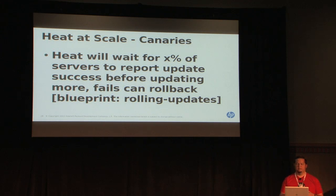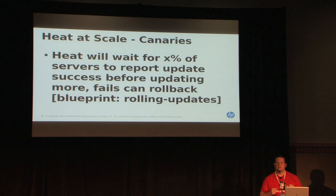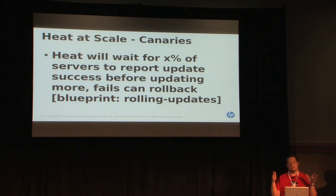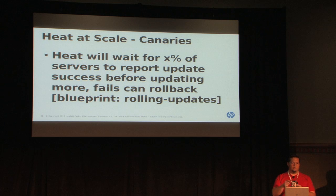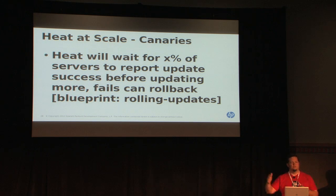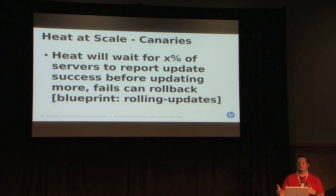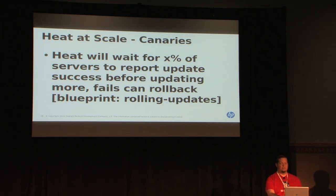We need a few things in Heat. Heat needs a canary rolling deploy type of system — where you maintain a maximum percentage of change during an update. If you have 100 servers to update, you update one, make sure it passes the test, make sure monitors say everything's still working, then update two, then ten, and go forward. If anything goes wrong before a point of no return, you roll back. We're going to be driving that feature in.